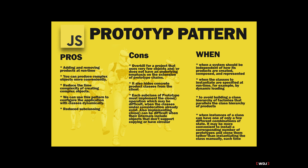When should you use this? According to the Gang of Four: when a system should be independent of how its products are created, composed, and represented; when the classes to instantiate are specified at runtime, for example by dynamic loading; to avoid building a class hierarchy of factories that parallels the class hierarchy of products; and when instances of a class can have one of only a few different combinations of state — like in our example where we only added one extra item.